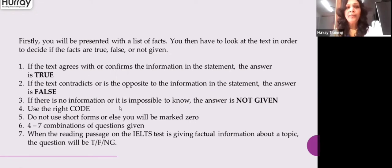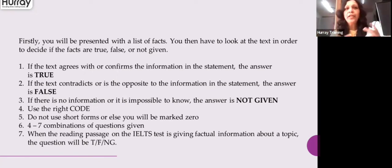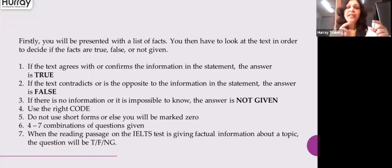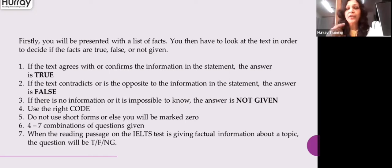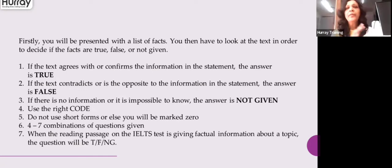The third point is: if there is no information or it is impossible to know, then the answer is not given. Sometimes the entire information is not in the text. But sometimes they give partial information in the question that is not sufficient to answer whether it's true or false, because the entire information is not there. Either the entire information is absent or only partial information is given — you don't have sufficient data to say true or false. In that case, write not given.